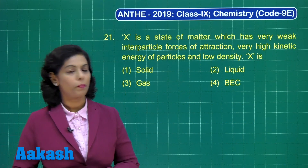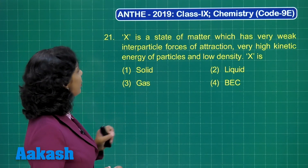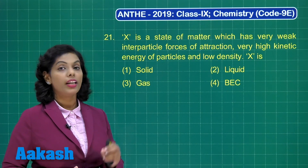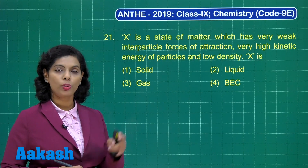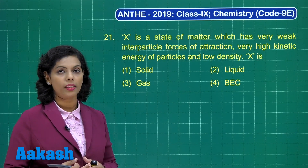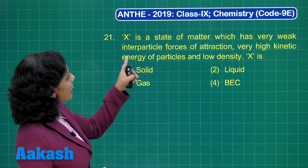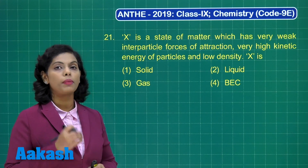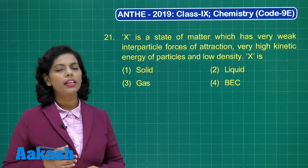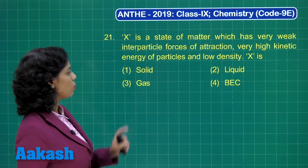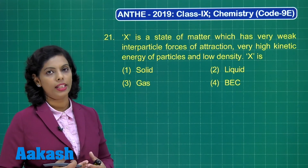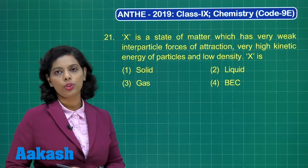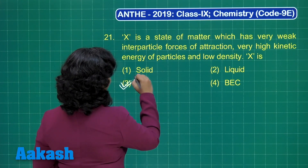Question number 21. X is a state of matter which has very weak inter-particle forces of attraction, very high kinetic energy of the particles and a low density. X is? There are three basic states of matter — solid, liquid and gas — and two advanced states, BEC and plasma state. The gaseous state has very weak inter-particle forces of attraction and very high kinetic energy. Only the gaseous state exhibits both these qualities, so option 3 is the correct answer.